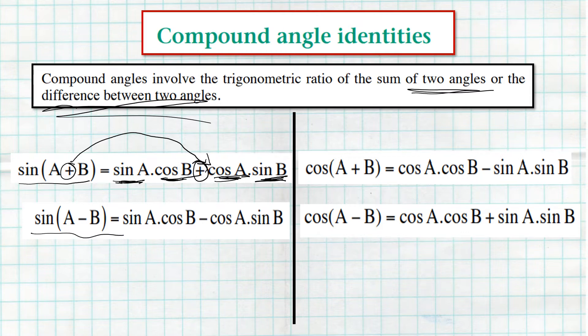For sin(A − B): it's the same pattern — sinA·cosB − cosA·sinB. Because the sign was negative, we keep it negative. With sine we always keep the sign as it is.